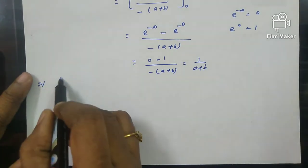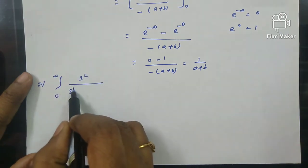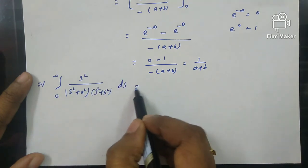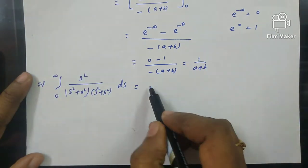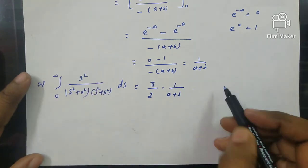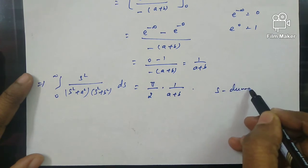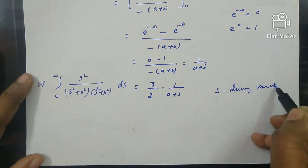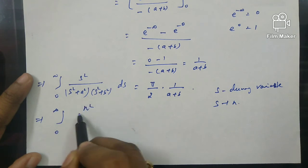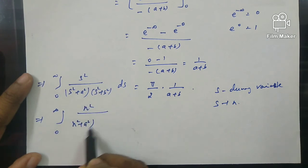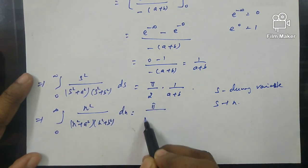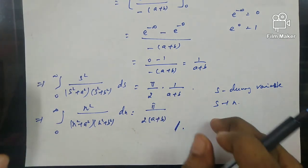Therefore, the integral from 0 to infinity of s² divided by (s² + a²)(s² + b²) ds equals π/2 times 1/(a+b). Replacing s with x, the final answer is: the integral from 0 to infinity of x² divided by (x² + a²)(x² + b²) dx equals π / [2(a+b)]. Thank you for watching.